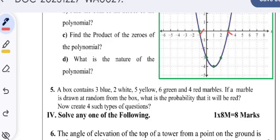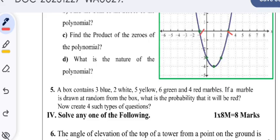What is the nature of the polynomial? Actually, the nature of the roots is real and unequal. If the name of the polynomial is required, it is a quadratic polynomial. If the name of the graph is required, it's a parabola.